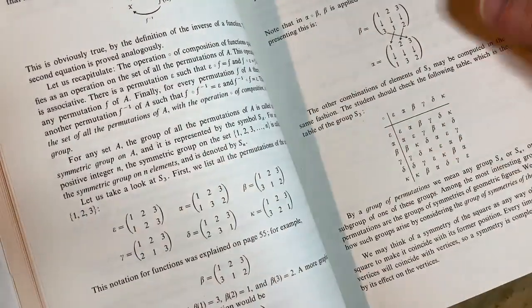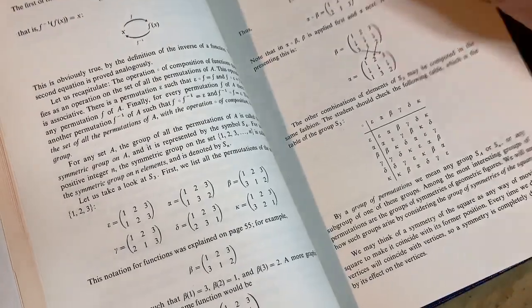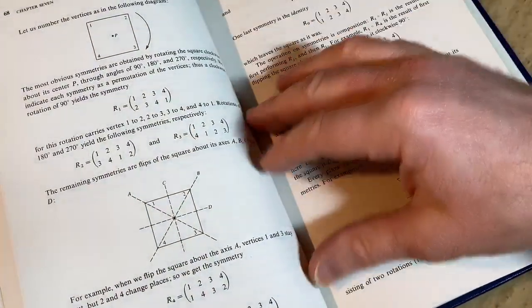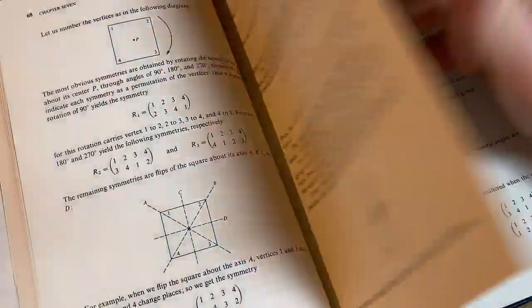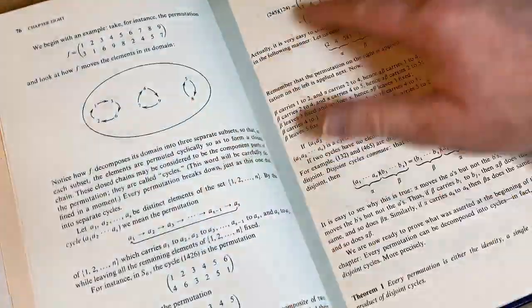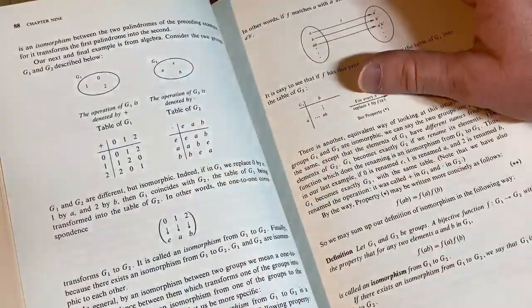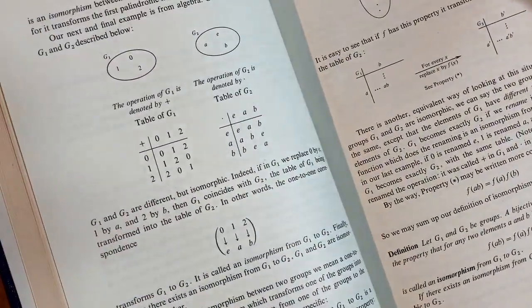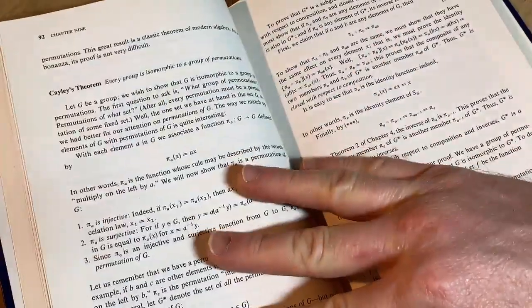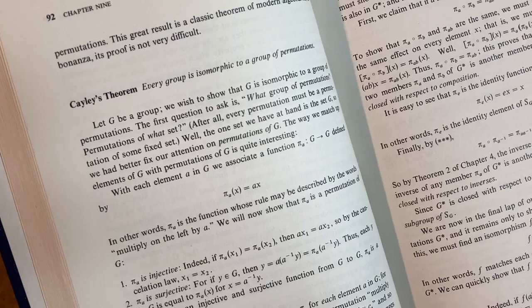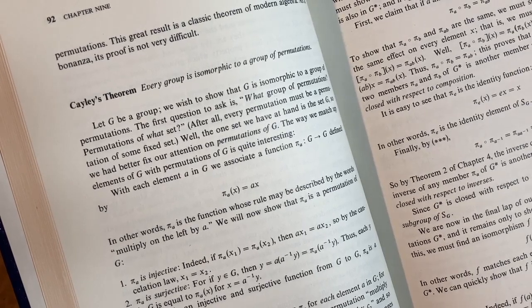And there's six of them. You can count them using a counting argument and you'll see that there's 3 factorial, which is equal to six of them. Pretty cool stuff. Abstract algebra, again, is a beautiful subject. And it's just nice to look here at this book. Cayley's theorem. That's important. Every group is isomorphic to a group of permutations. That's a big deal.